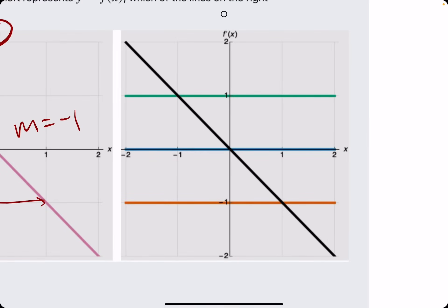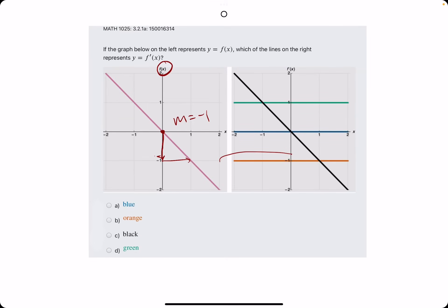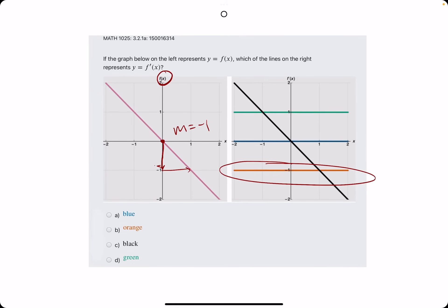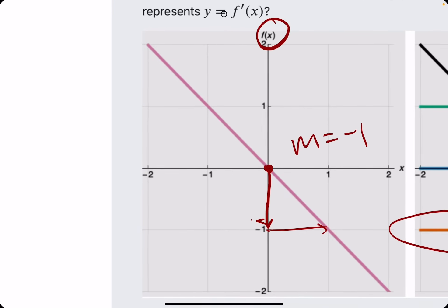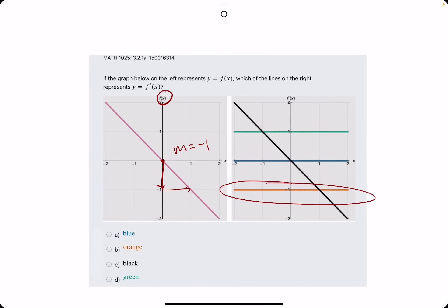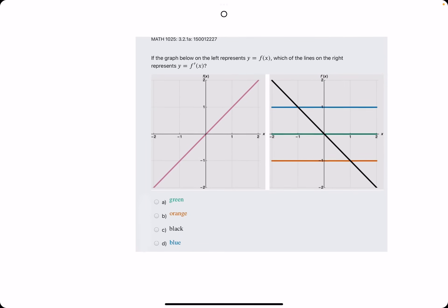We are looking for the graph that has a y value of negative one. That would be the orange line here, because that is constant. It's a constant value along negative one, and this function has a constant slope of negative one. Break out the eraser to see orange is our answer there.